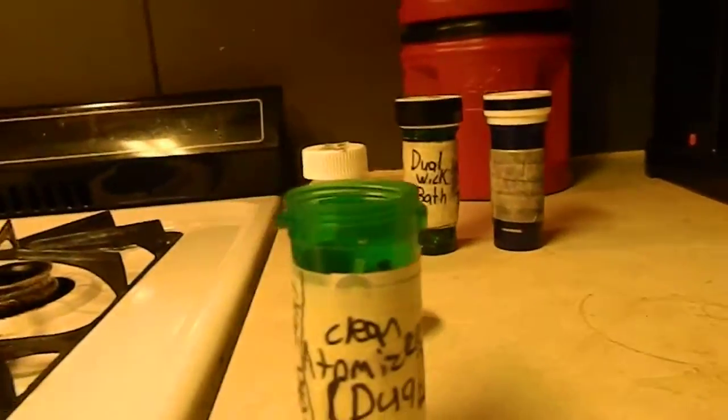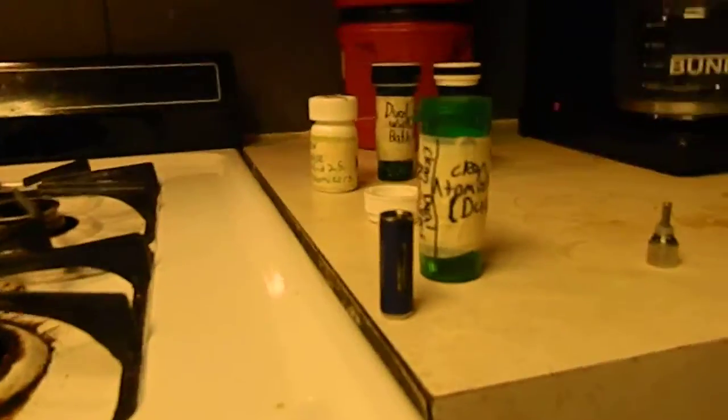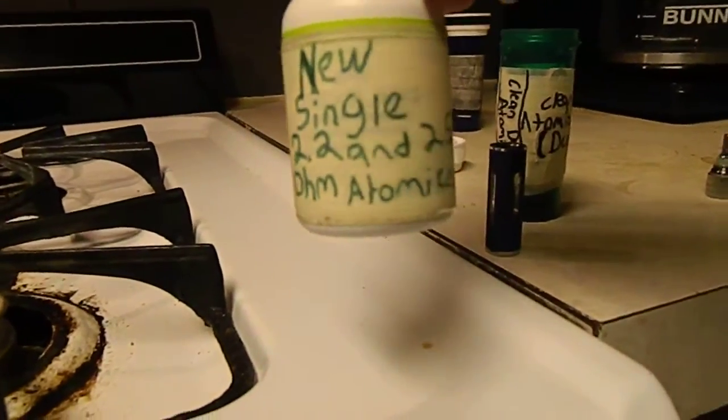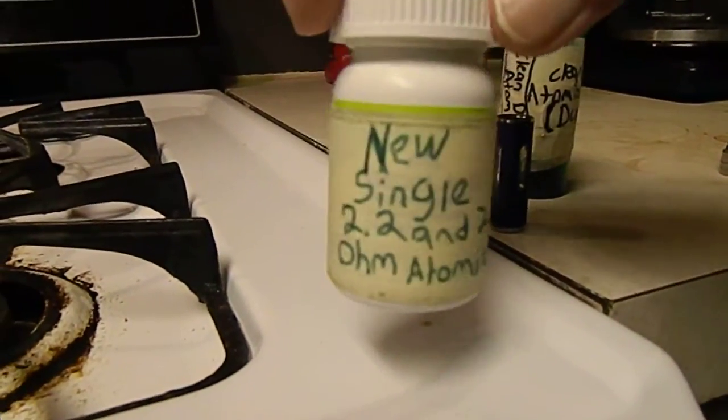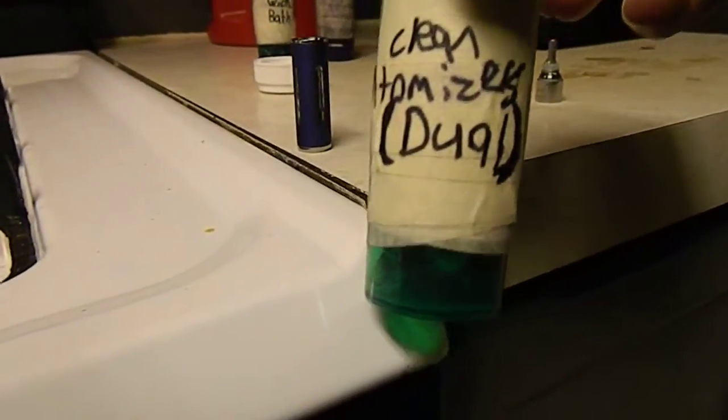You want to fill the bottles about three quarters of the way, and then what I did was every clean one, I just put in another bottle. These are my atomizer ranges for the singles, and then here are my clean duals right now.